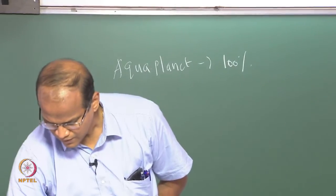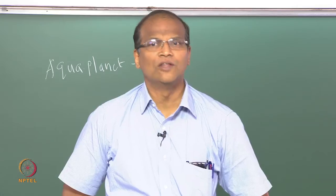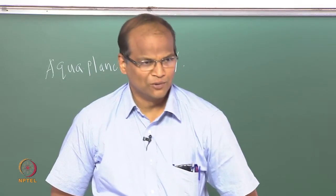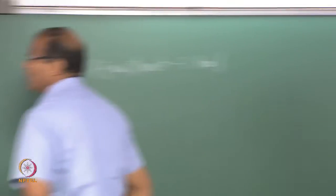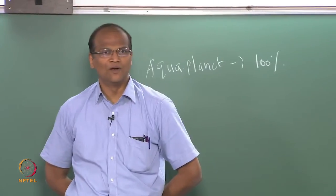Now looking at the earth system, the various components — the oceans, the cryosphere, the terrestrial biosphere, the earth's crust and mantle — which I have indicated in gray color, we have already considered so far. If you recall, this was the first slide in the second chapter. Part 1 was the components, part 2 is the hydrological cycle, part 3 is the carbon cycle, and part 4 is oxygen in the earth's system. We need to study each of these. After we complete all four parts, I promise we will get into atmospheric thermodynamics. Part 1 is now over and we will go to part 2 — the hydrological cycle.